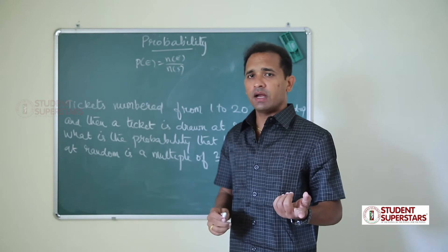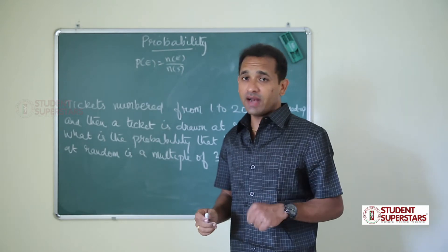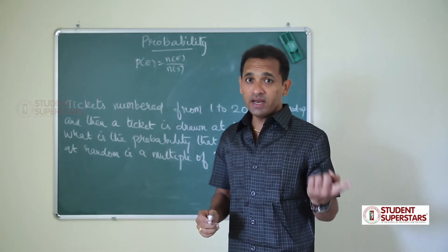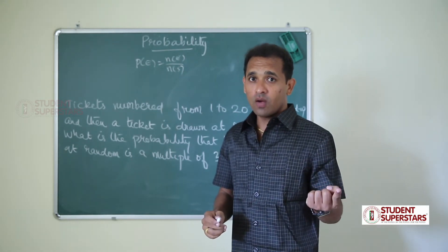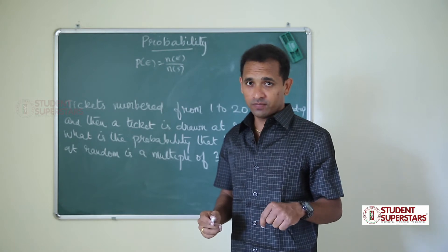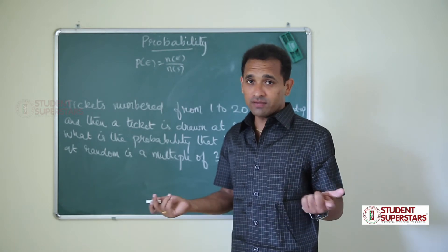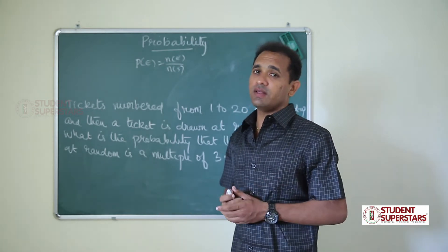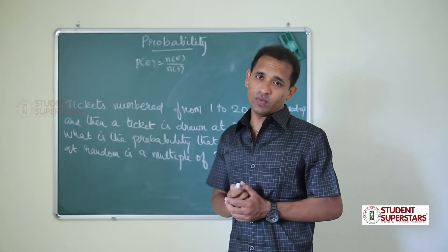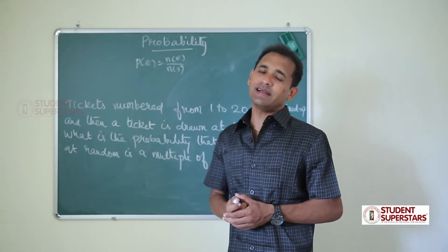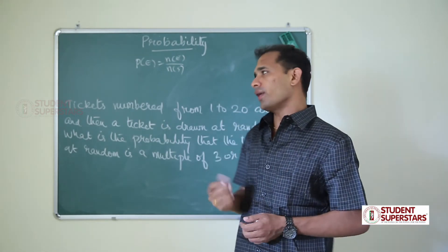There was raining yesterday. Did there be raining today? What is the probability of raining today? The answer is: this is an uncertain event. Probability is not for uncertain events.